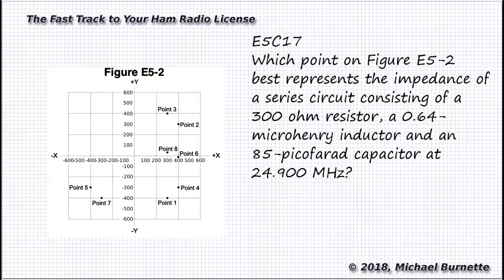Only one of these charting questions uses a circuit with both capacitance and inductance, and this is that question. There's a 300 ohm resistor, great. So we plot a point at 300 on the x-axis. That narrows down our possibilities to points 3, 8, and 1. They're the only ones that are straight up or down from 300. We'll need to calculate both the capacitive reactants and the inductive reactants.